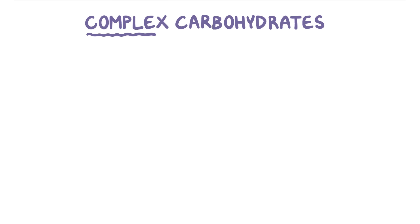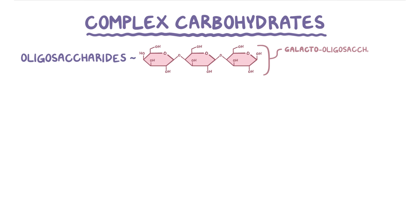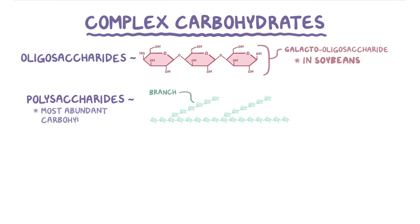Next, there are the complex carbohydrates. There are oligosaccharides like galacto-oligosaccharides, which are short chains of galactose molecules like those found in soybeans. Then there are polysaccharides, which are even larger chains with branches, and are the most abundant type of carbohydrates found in food.